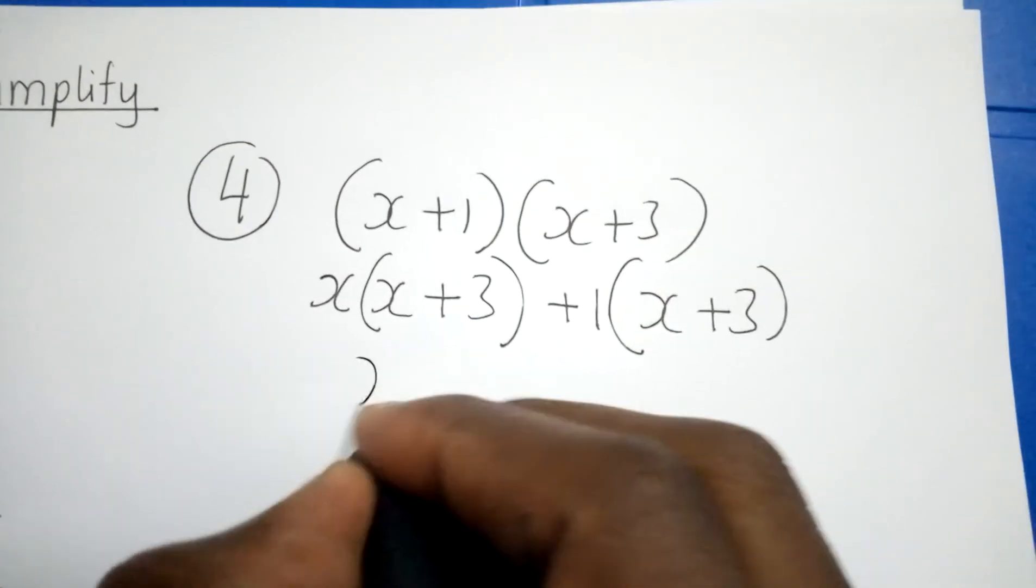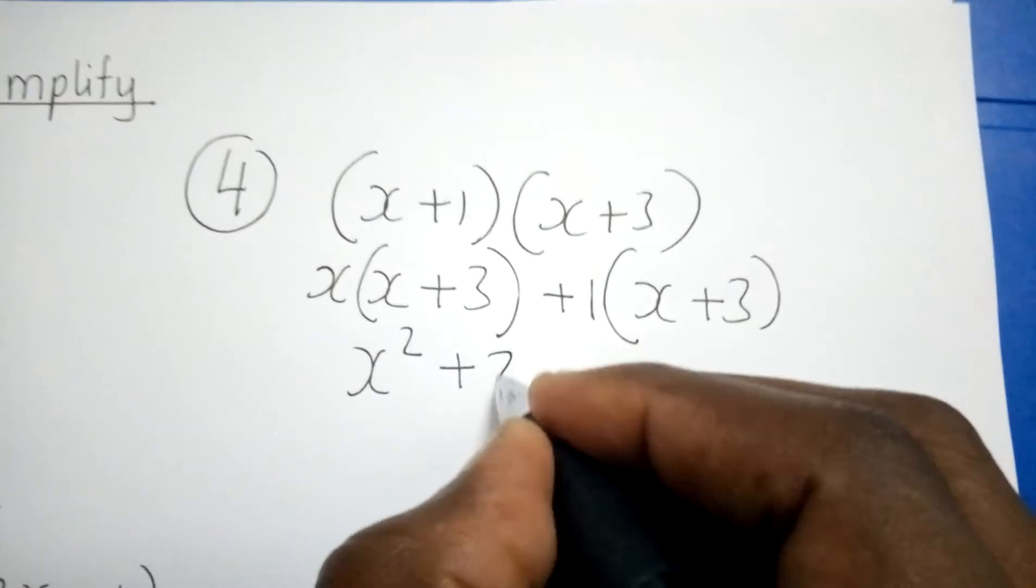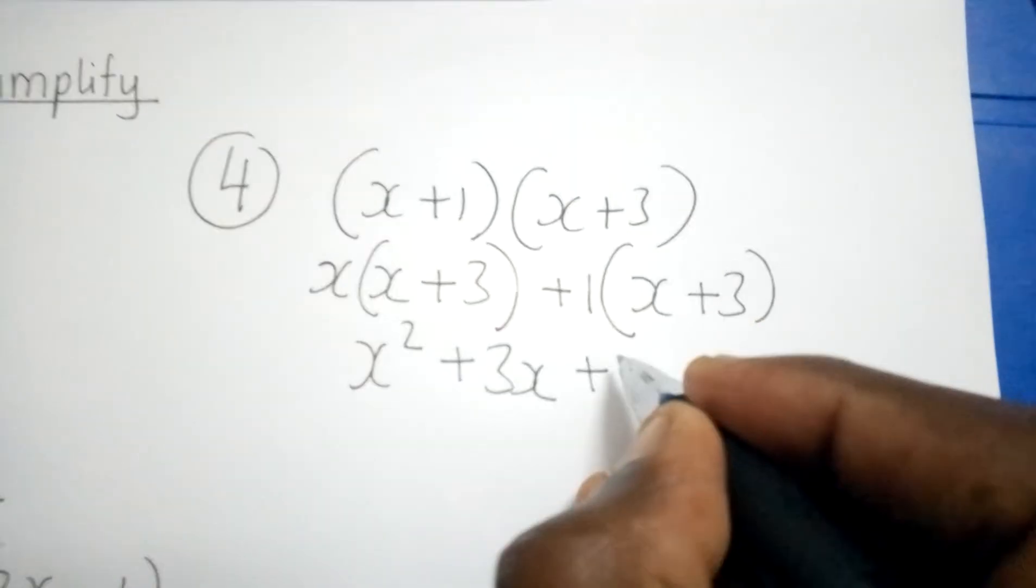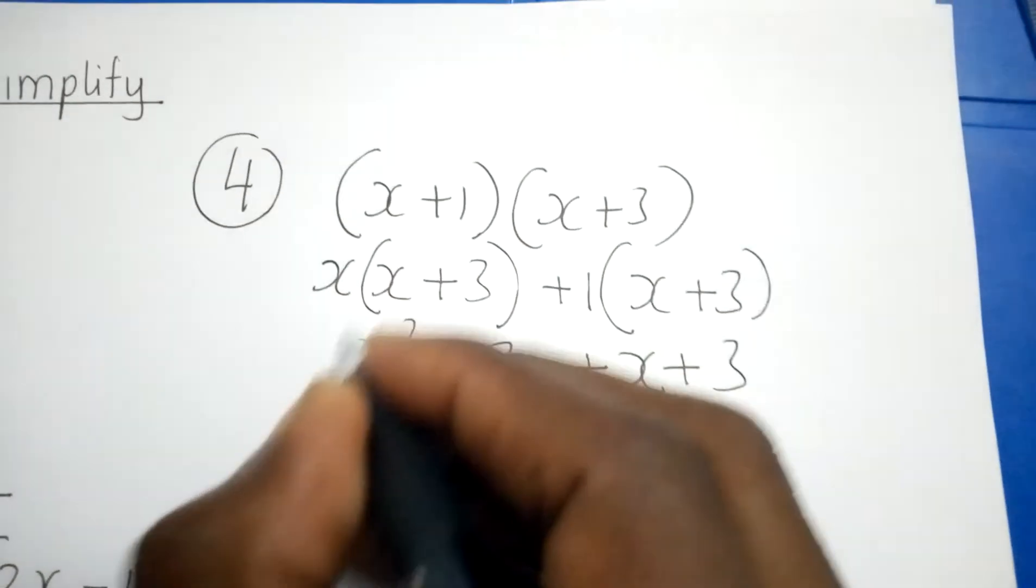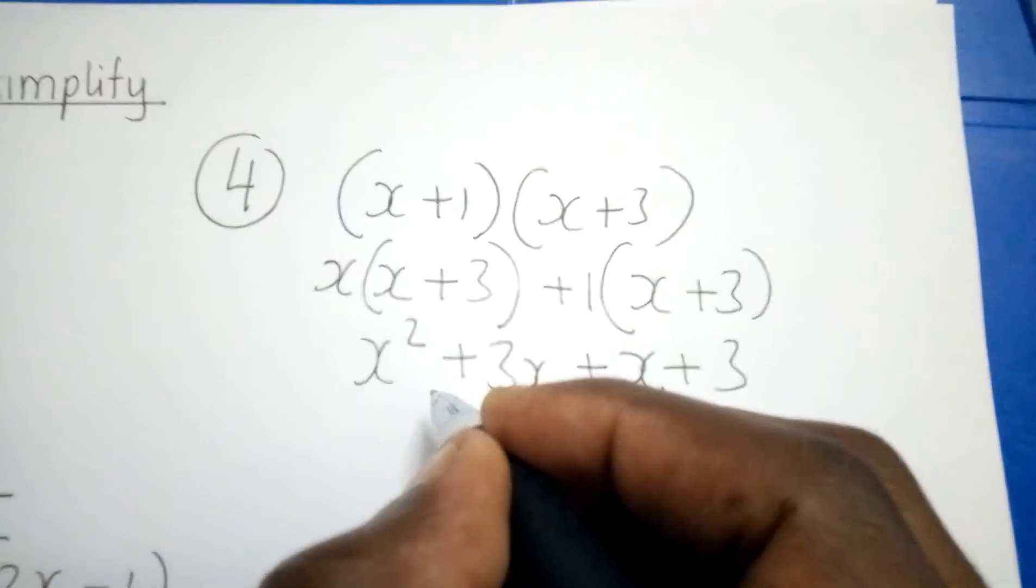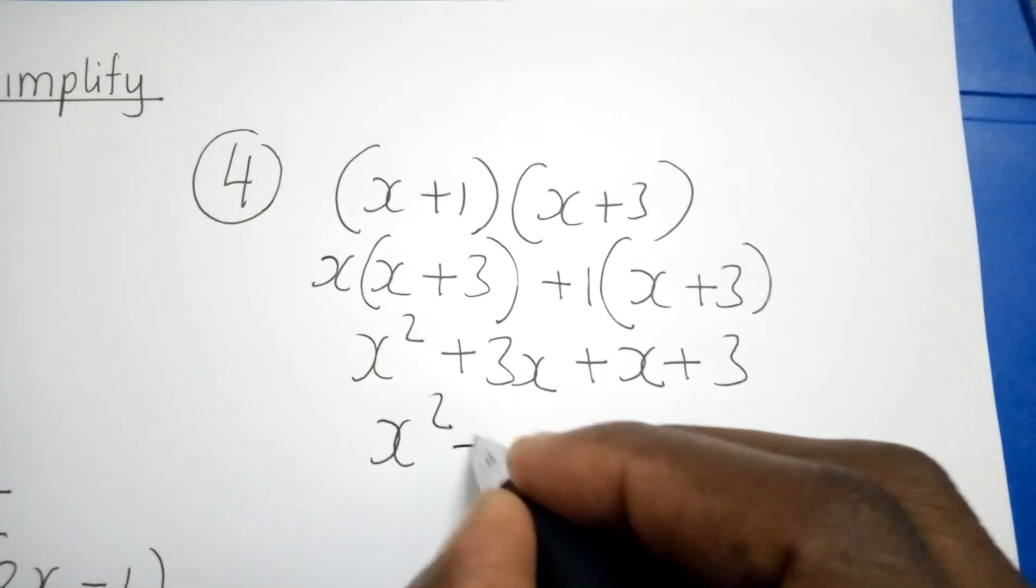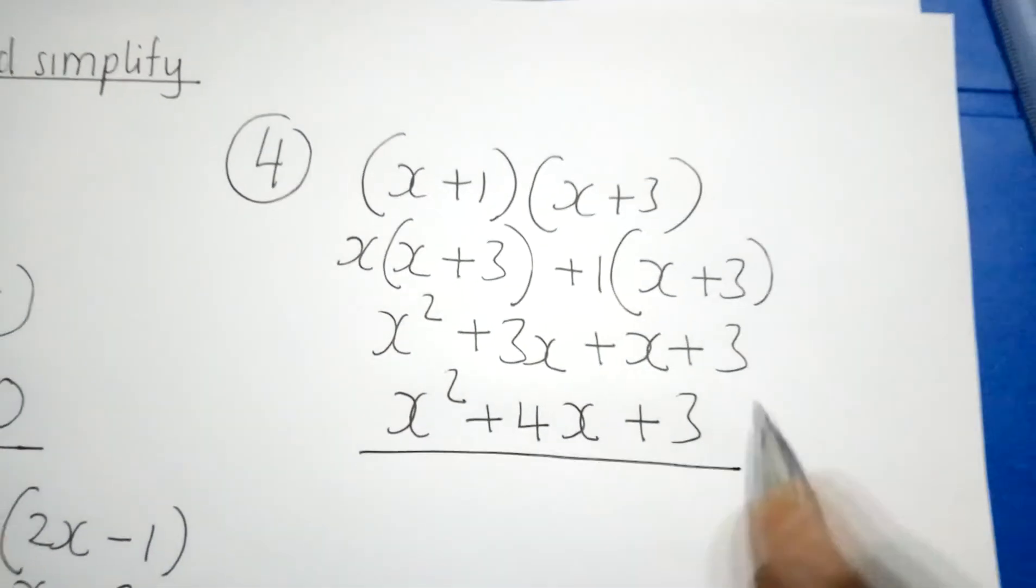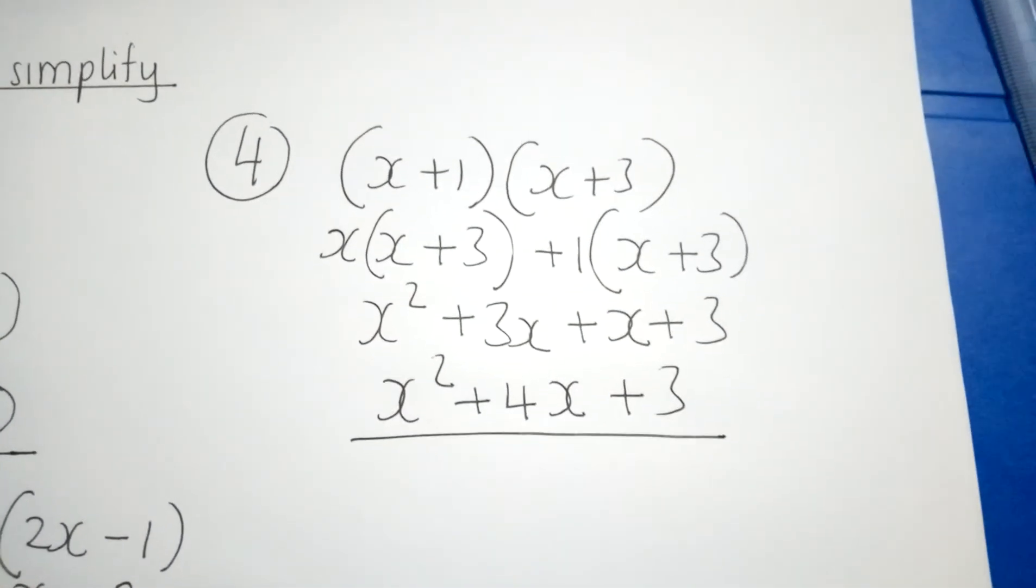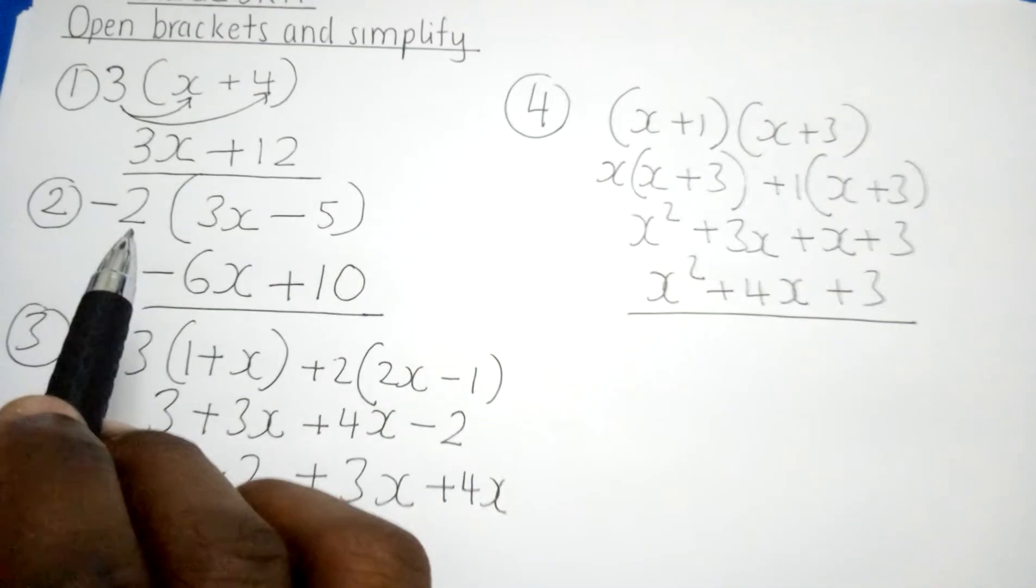Hence we shall get x times x which is x squared, 3 times x we get 3x, 1 times x we get x, and 1 times 3 we get positive 3. Remember x squared does not have a pattern so it will remain x squared. Here we have 3x, here we have x, together it makes 4x, and 3 is alone.